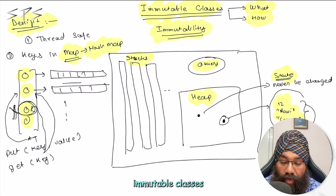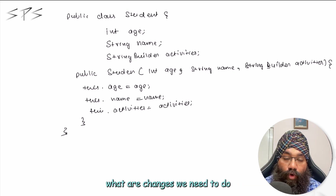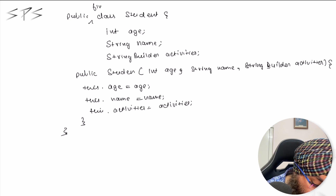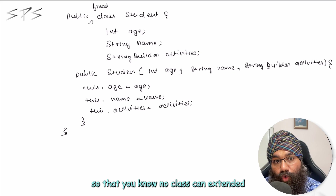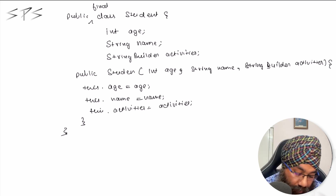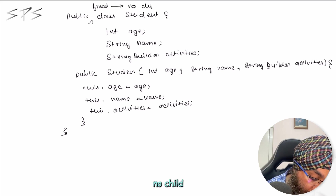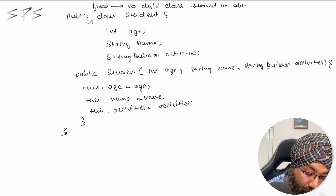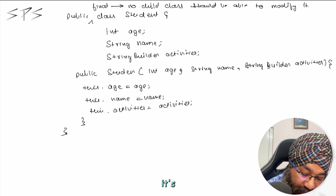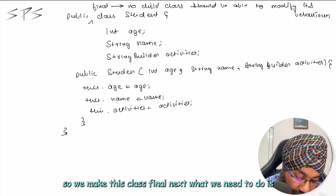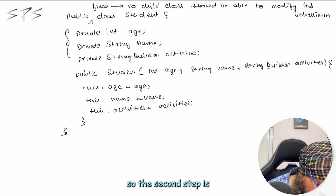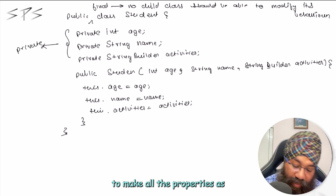Now let's see if we want to make our student class immutable, what changes we need to do. The first change is to make this class final, so that no class can extend it and modify its behavior — no child class should be able to modify its behavior. So we make this class final. Next, we will make all the properties as private.